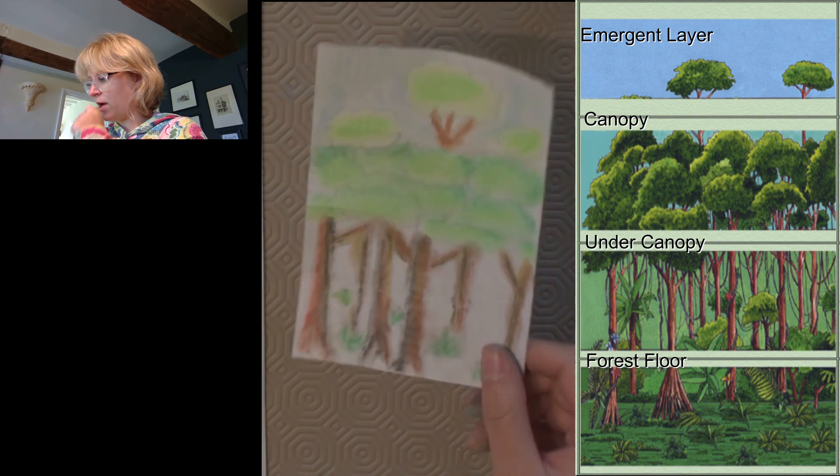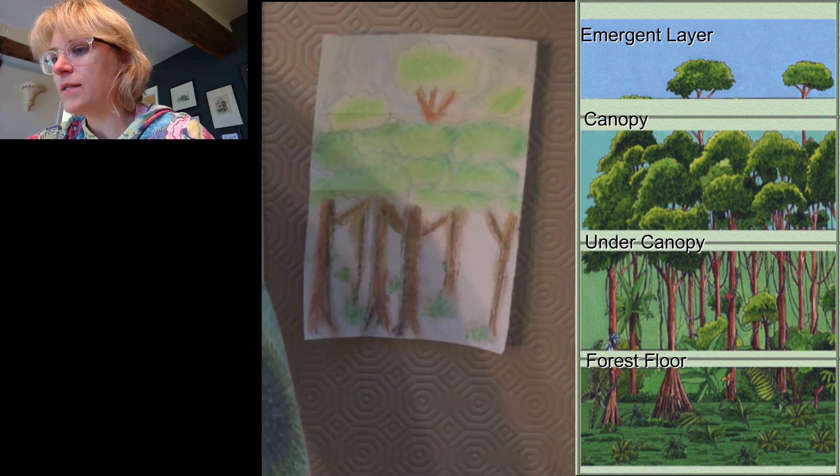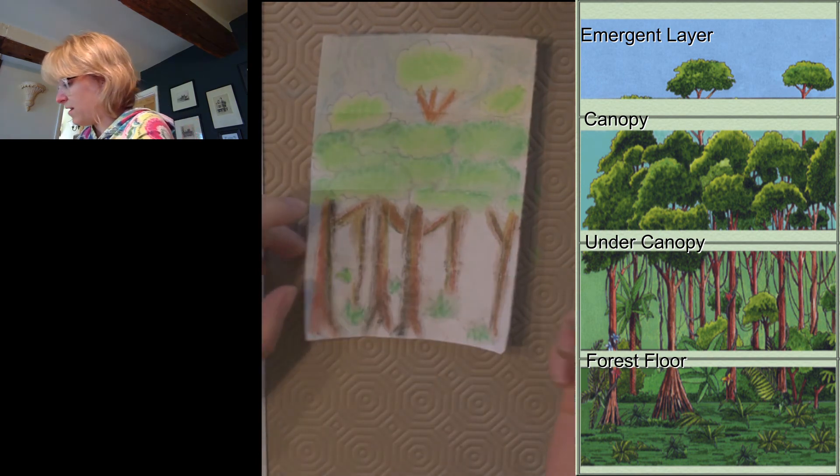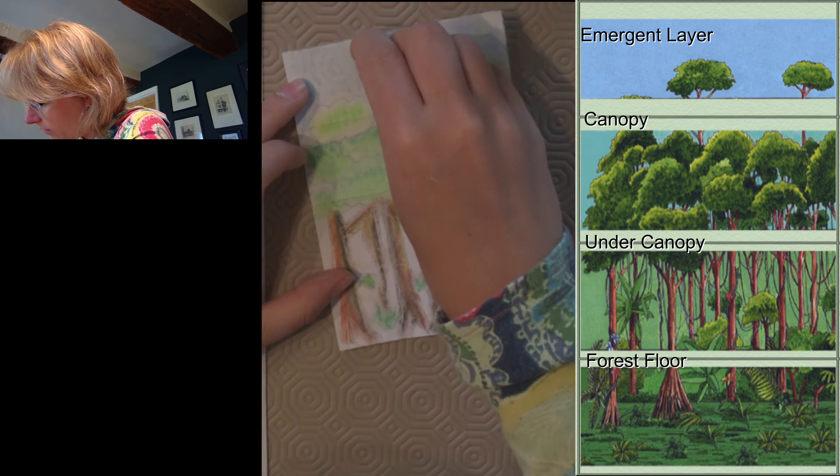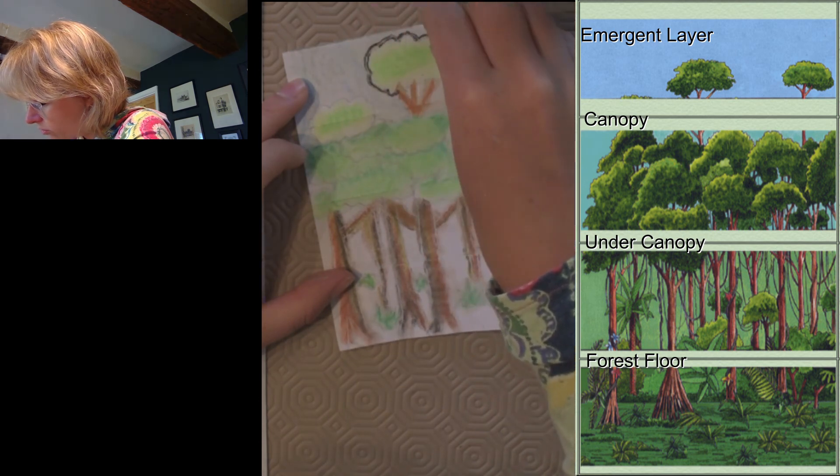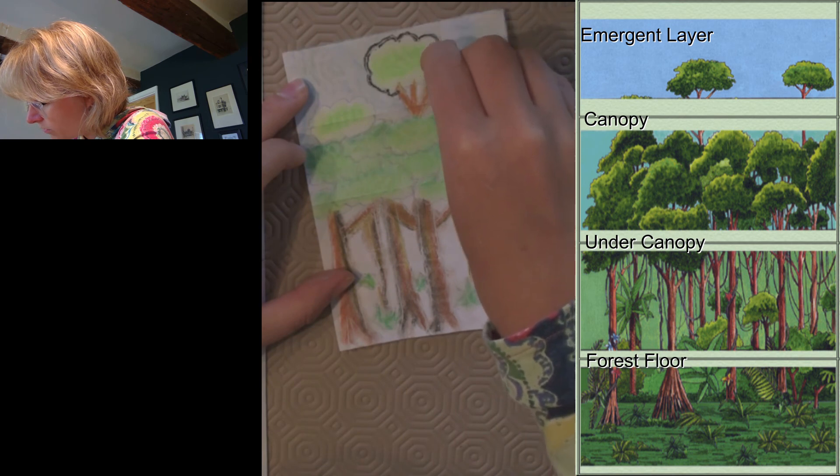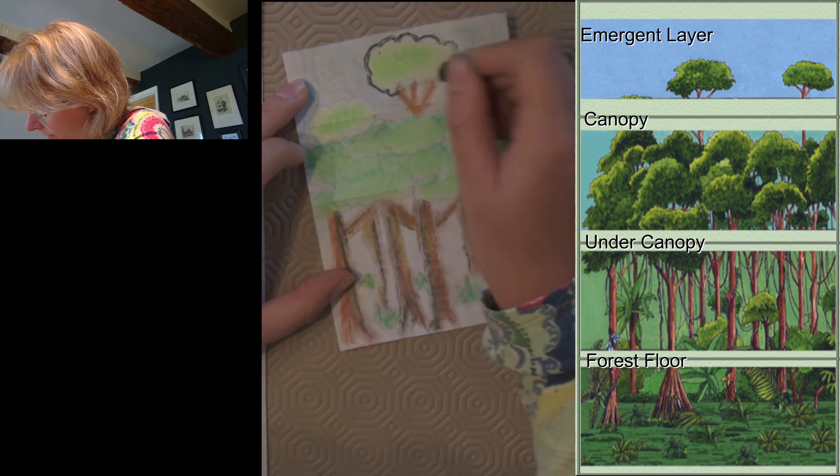So there we go, I have my trees, my rainforest layers. You might choose if you've got a thin black to maybe outline what you have drawn, just to make it stand out a bit more. Or you can just leave it as is.